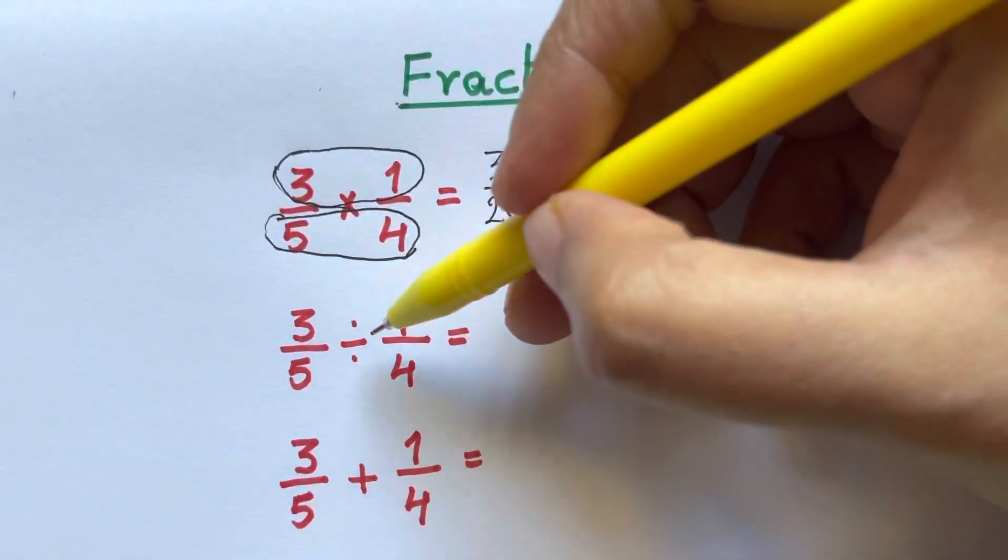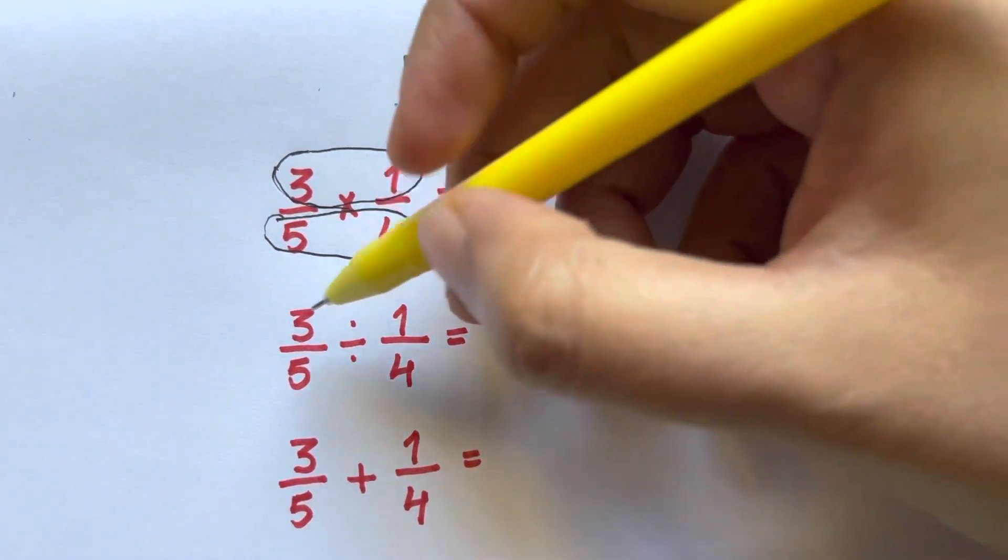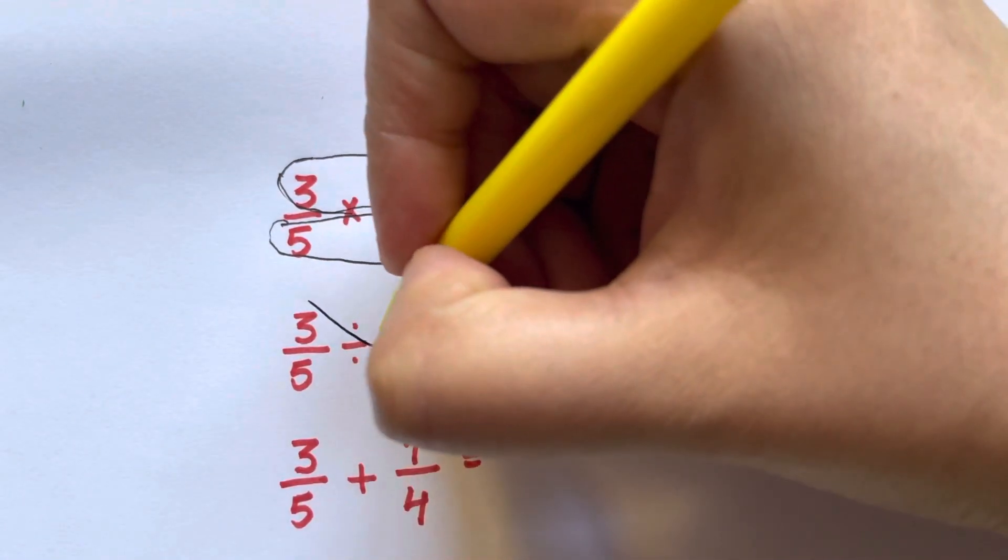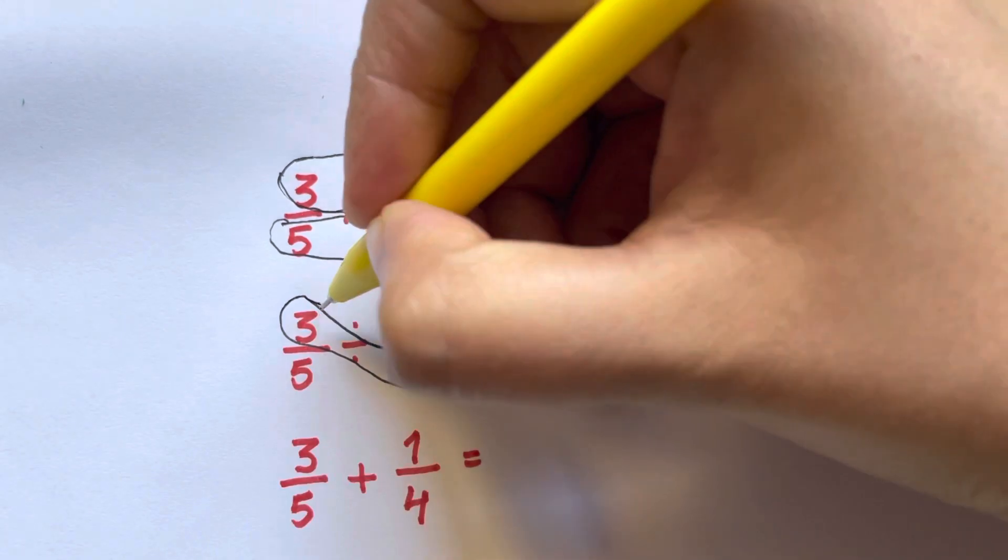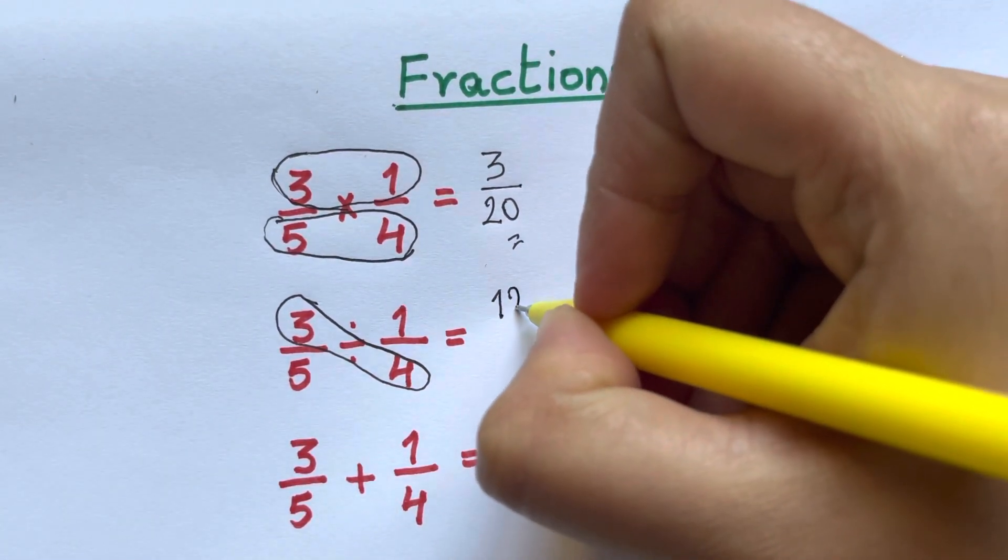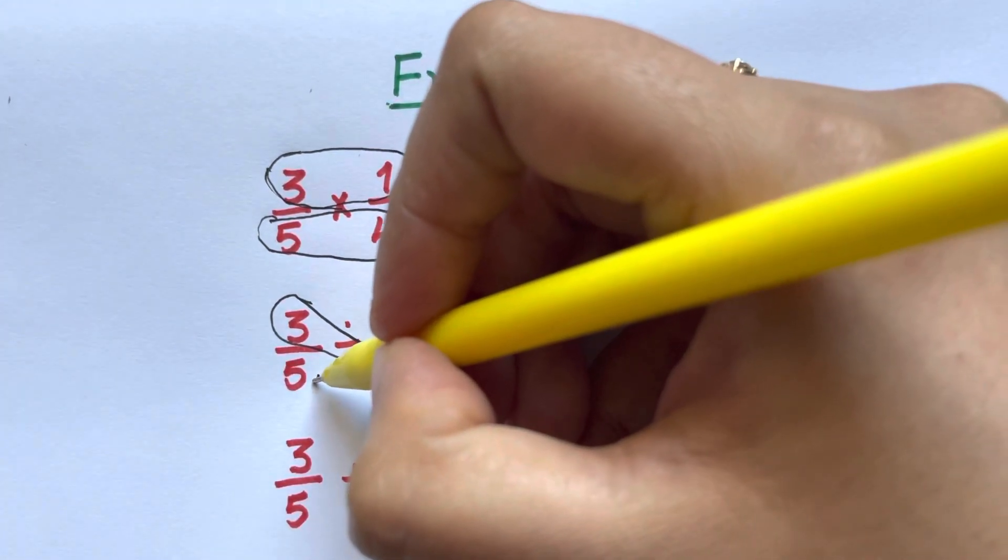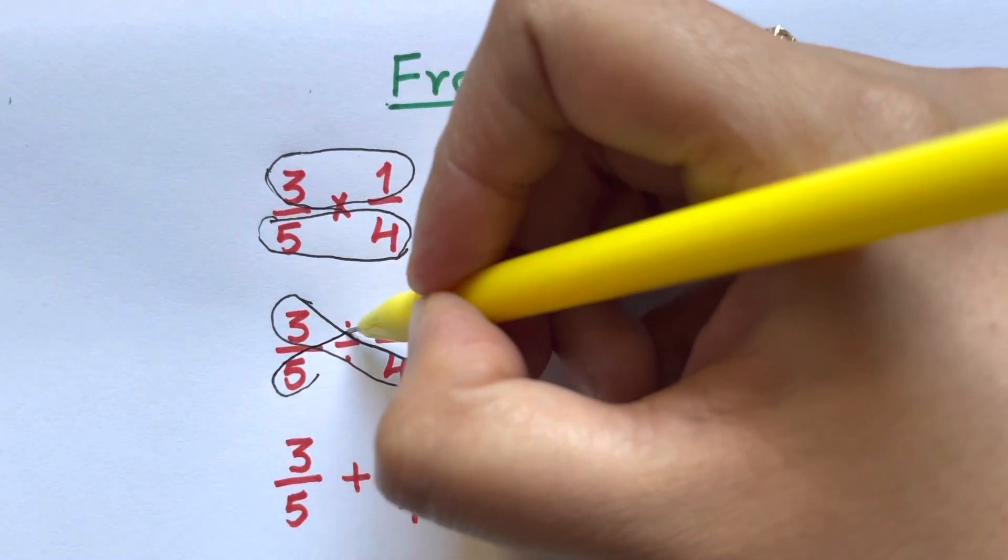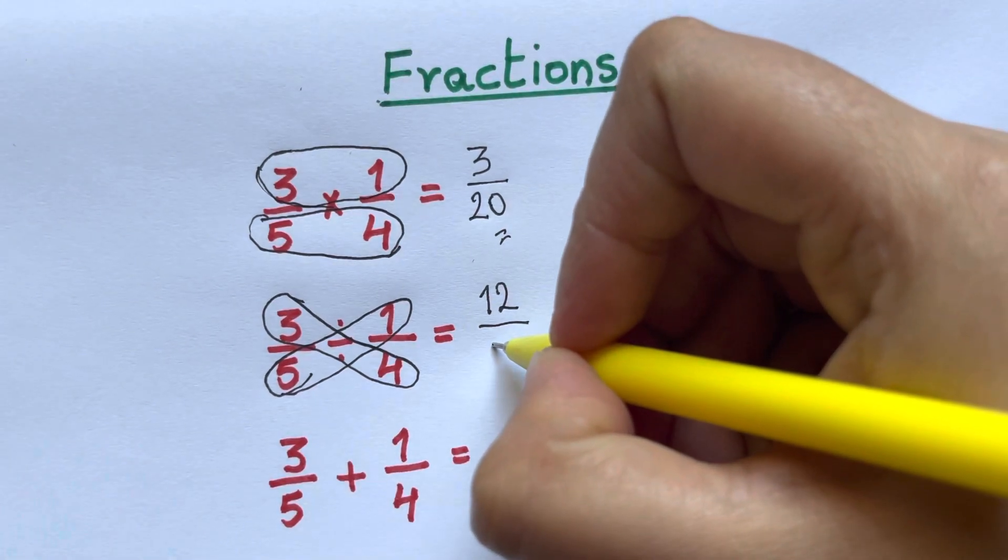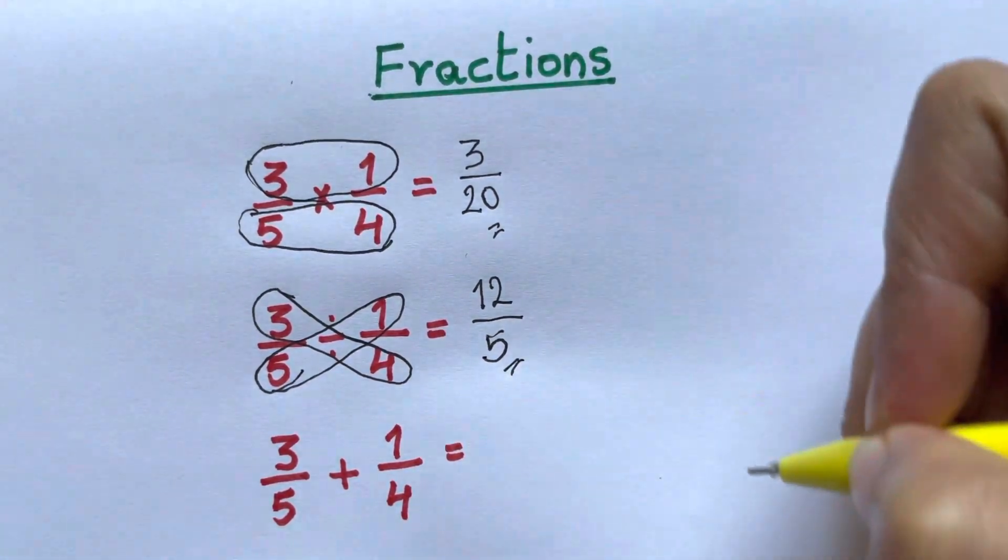Now for division of fractions. 3 over 5 divided by 1 over 4. All you have to do is cross multiply. Bubble up 3 and 4 and multiply them together for the numerator. That is 12. Now for the denominator, multiply 5 and 1. That is 5 times 1, which gives your denominator. So 12 over 5. That's your answer.